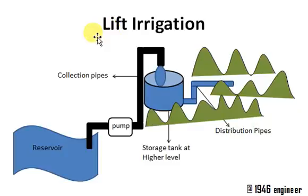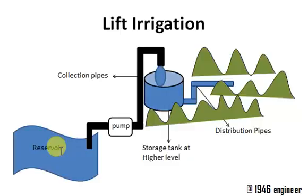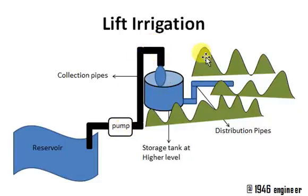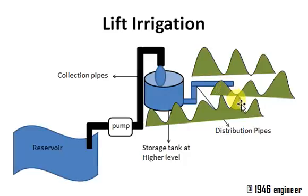What we do is we follow a process called lift irrigation. We pump the water from reservoirs, dams, or depression areas using electrically operated pumps. We lift the water and store it in a storage tank at a higher elevation, and then we distribute it back to those hilly terrain areas or places which lack adequate rainfall, in a completely controlled and optimal way.